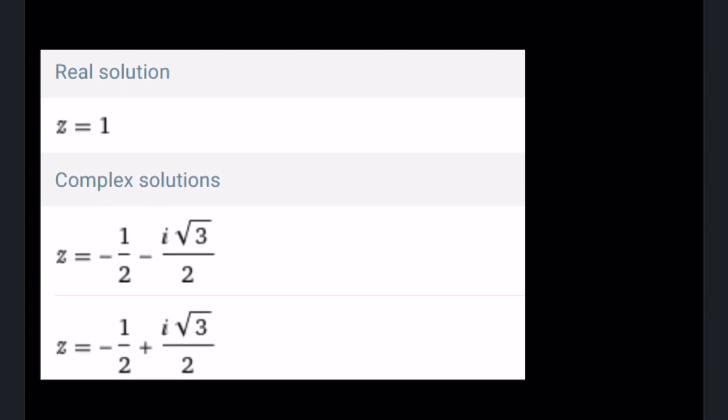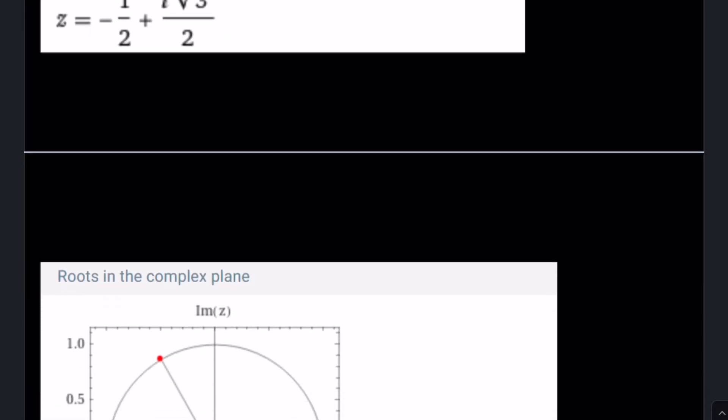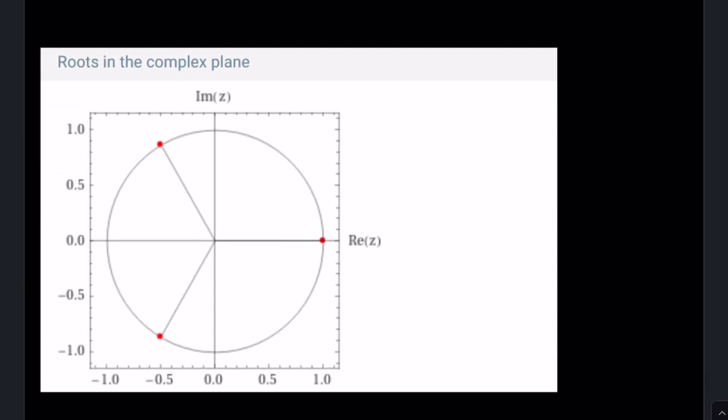Good job, Wolfram Alpha. You got the same solutions. The real solution is z equals 1. And this is what they look like in the complex plane. Notice that they are equally separated. Basically, this is 120 degrees, this is 120 degrees, this is 120 degrees. So that just makes 2 pi or 360 degrees.